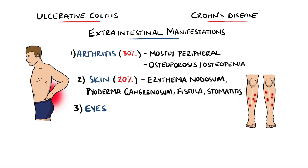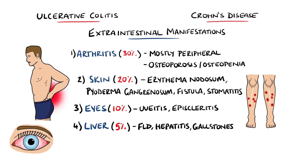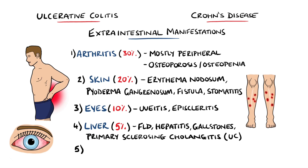Eyes are affected in 10% of cases, including uveitis and episcleritis. In 5% of cases, the liver is involved, which can include fatty liver disease, hepatitis, or gallstones. Also remember that there is a link between ulcerative colitis and primary sclerosing cholangitis. Anaemia is also included here, which can result from iron deficiency due to poor absorption or chronic bleeding, as well as vitamin B12 and folate deficiencies.